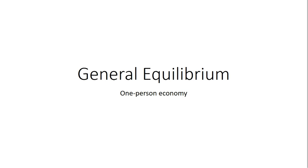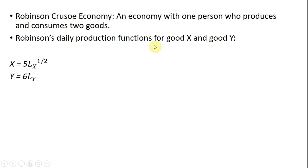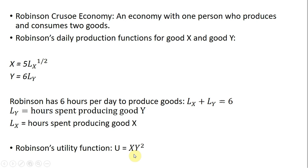In this video we're going to do some general equilibrium analysis. We're going to have a one-person economy, or a Robinson Crusoe economy — one person who produces and consumes two goods. Robinson has two production functions: he can produce good x and good y, where production depends on hours of work spent producing each good. Robinson has six hours per day to produce goods, so hours in good x plus hours in good y must equal six. Robinson also has a utility function, and our goal is to maximize his utility.